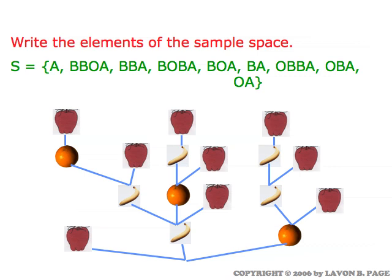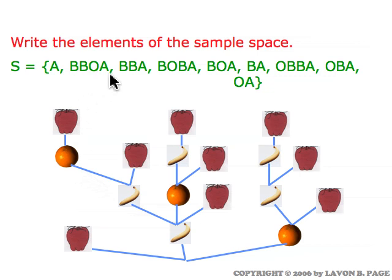If you want to write down the sample space without a tree, you can list sequentially what Andy pulls from the bag. He might get the apple first, represented as A. Or he might draw banana, banana, orange, apple — written B, B, O, A. Other outcomes include B, B, A; B, O, B, A; B, O, A; B, A; and so forth. No matter how we represent it — as a tree or as sequential notation — there are nine different things that can happen.